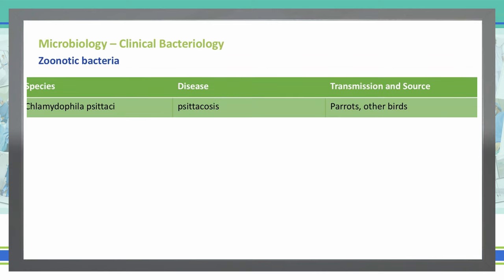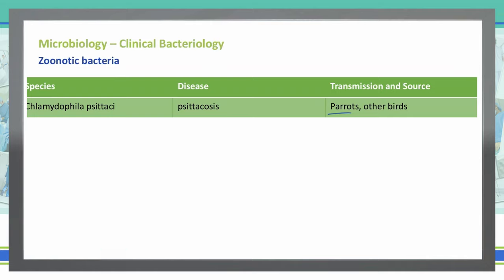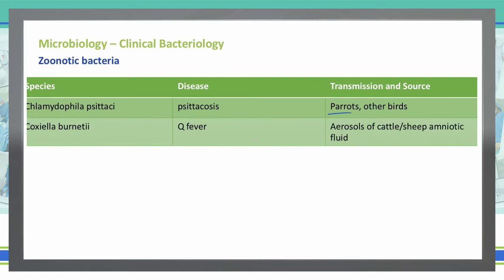Chlamydophilia psittaci — or Chlamydia psittaci — causes psittacosis, which comes from parrots. We've already discussed that in previous videos, so go back and find that video if you want to learn more. Coxiella burnetii is what gives us Q fever, and this comes from cattle and sheep amniotic fluid that has been aerosolized. So if you're around cattle or sheep as they're giving birth, that amniotic fluid can become aerosolized, and if you inhale it, that can cause Q fever.